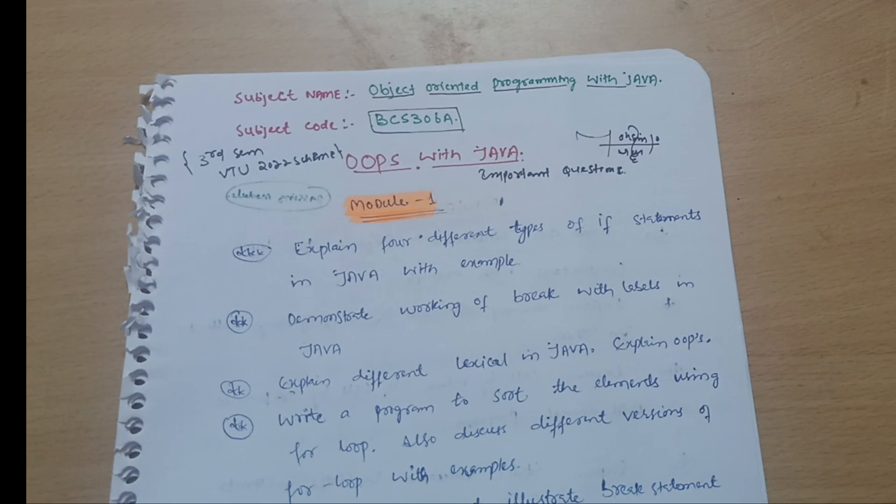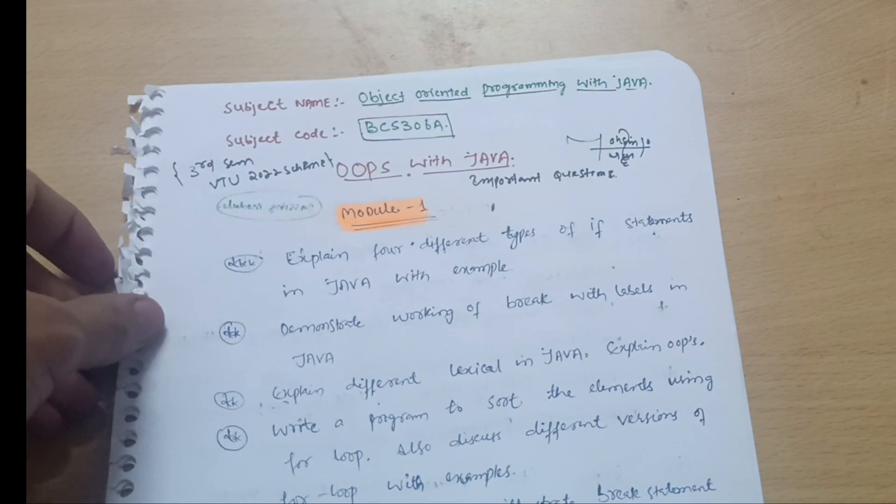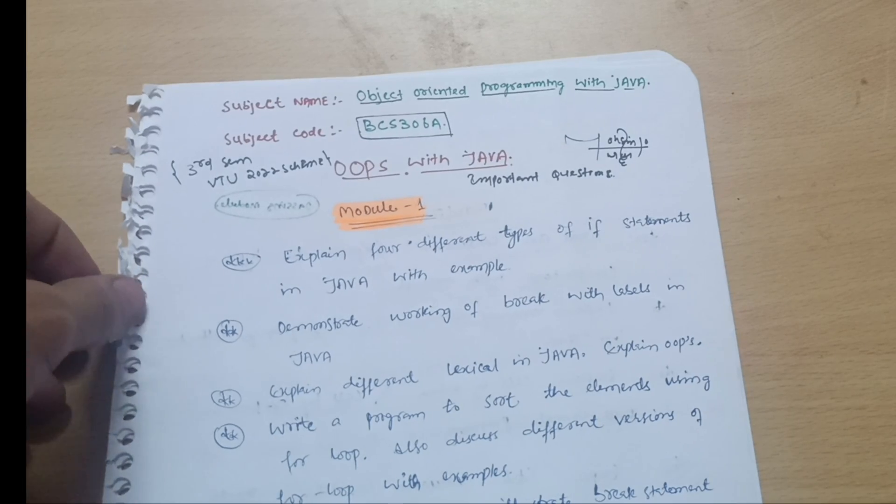Right now I am with another subject, that is Object Oriented Programming with Java, in short form OOPs with Java. Its subject code is BCS 306A, third semester with VTU 2022 scheme.